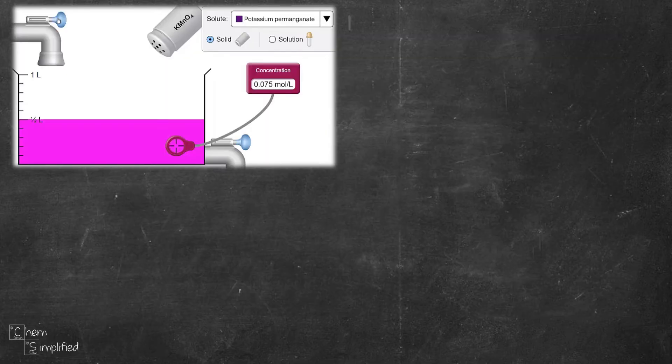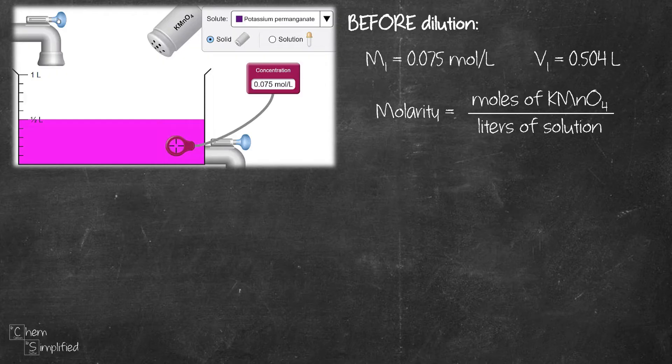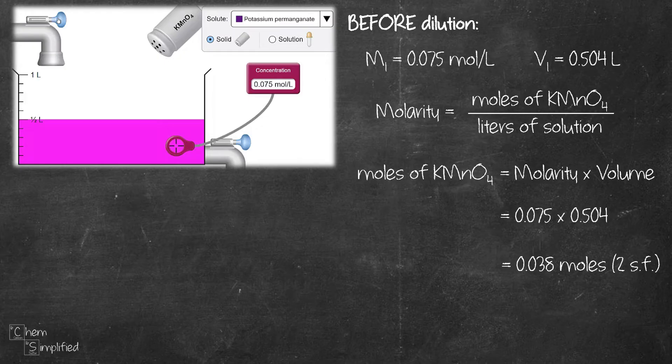Let's prove that. Before dilution, the concentration was 0.075 moles per liter and the volume was 0.504 liters. Now using the molarity formula, we need to find moles. So let's rearrange a little bit and we plug in the numbers and we get 0.038 moles. That means before dilution, the moles of KMnO4 that is in the solution was 0.038 moles.